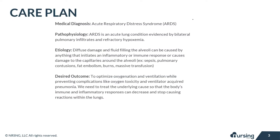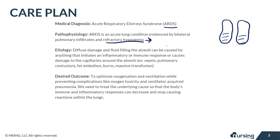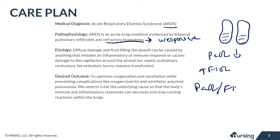Acute respiratory distress syndrome, also known as ARDS, is an acute lung condition evidenced by bilateral pulmonary infiltrates — which is like fluid in the lungs — and also refractory hypoxemia. Refractory hypoxemia is hypoxemia that is unresponsive to treatment, where the PaO2 level remains low despite increasing the FiO2. This may be measured with the PaO2/FiO2 ratio.